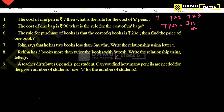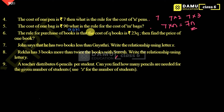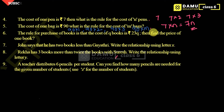Question five: the cost of one bag is 90 rupees. What is the rule for the cost of m bags? Cost of 1 bag is 90×1, two bags is 90×2, three bags is 90×3, so for m number of bags the formula is 90×m. The answer for question five is 90m.